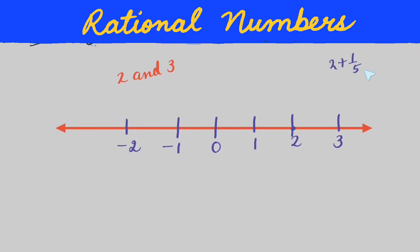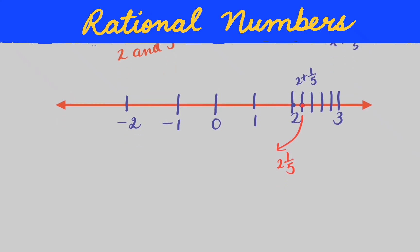We start from 2 and make five equal parts between 2 and 3: one, two, three, four, five. Out of five we mark the first part, so this is 2 + 1/5, which is 2⅕. This is our answer. The topic is clear to everyone. Thank you.